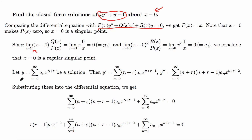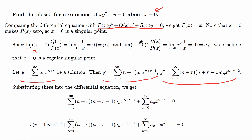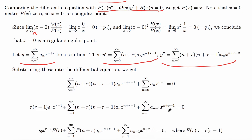We assume y = Σ aₙ xⁿ⁺ʳ, where r is to be determined, as a solution. We find the first and second derivatives and plug into the original equation. Multiplying y'' by x combines the exponents to give n+r−1, and adding y gives the equation equal to 0.